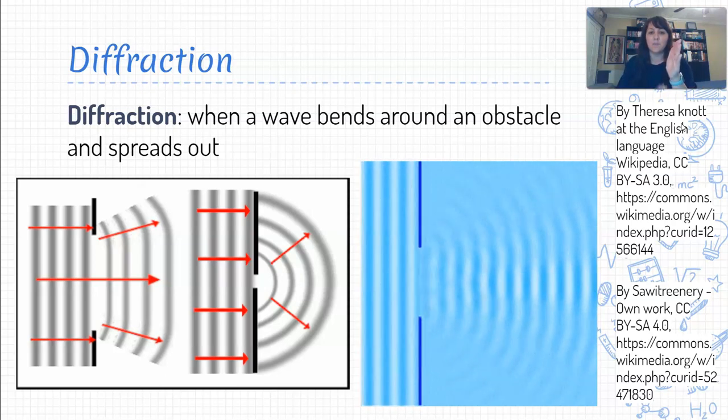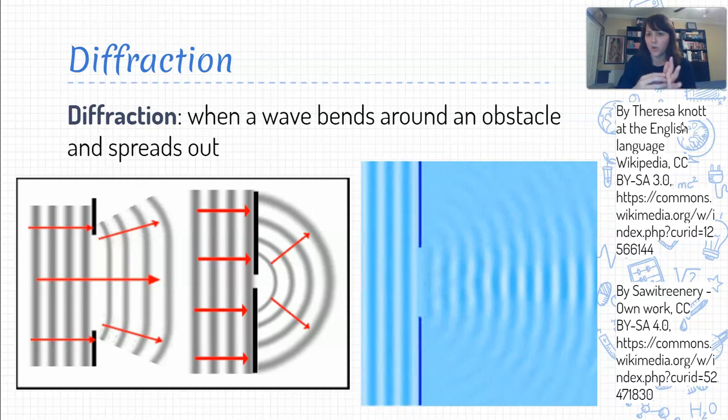And then on the right, we also have an animation. So we see these wave fronts that are moving along. They approach a wall with an aperture or an opening in it. And so the wave fronts go through that opening and then bend and spread out so that they're sort of like going around the walls almost. So that's a basic idea of what's going on with diffraction.